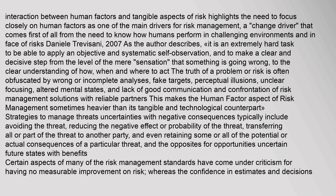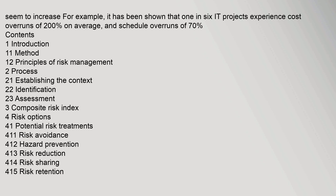Certain aspects of many risk management standards have come under criticism for having no measurable improvement on risk, whereas the confidence in estimates and decisions seems to increase. For example, it has been shown that one in six IT projects experience cost overruns of 200% on average and schedule overruns of 70%.